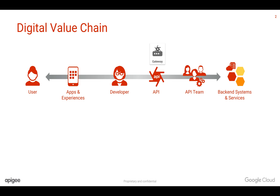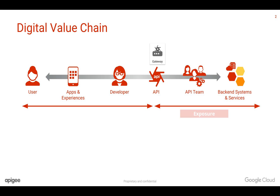Today this digital value chain is broken. You have the exposure channel where you are focusing today, and you are completely ignoring the consumption channel. In the exposure channel you are taking an inside-out approach — thinking about mostly transactional, point-to-point integrations like using ESBs. The usage is predictable and security models are built assuming services are within firewalls and consumed by known entities.